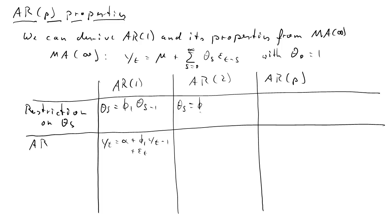Now for AR(2), that restriction on the MA(∞) coefficients has to be theta_s equals phi_1 times theta_{s-1} plus phi_2 times theta_{s-2}. And that restriction will deliver an AR(2) process.